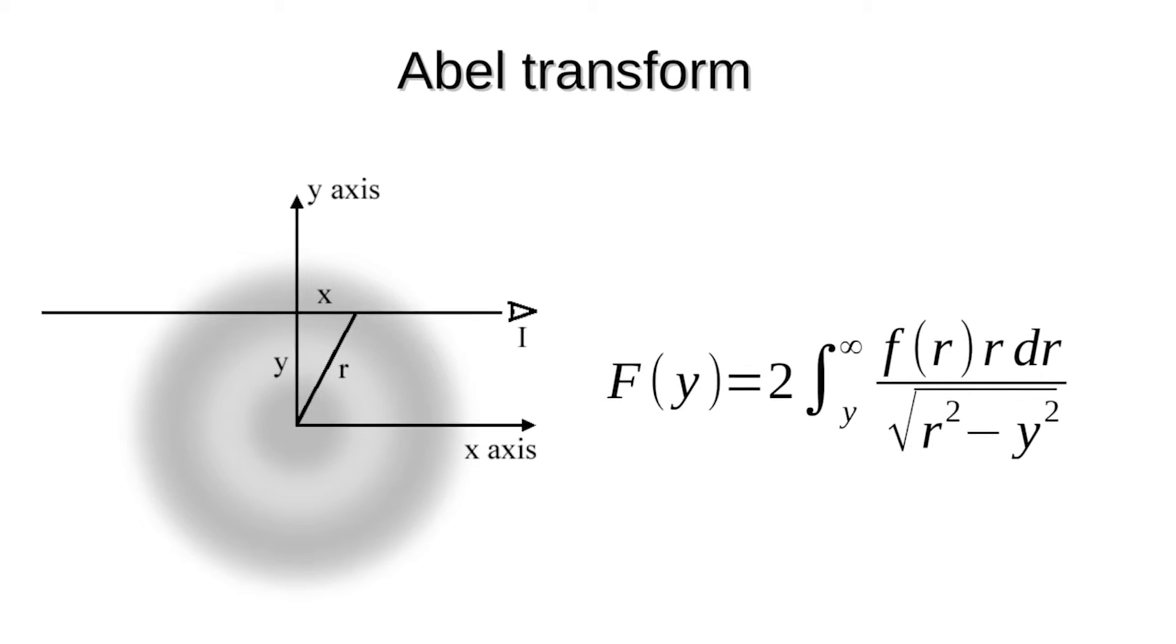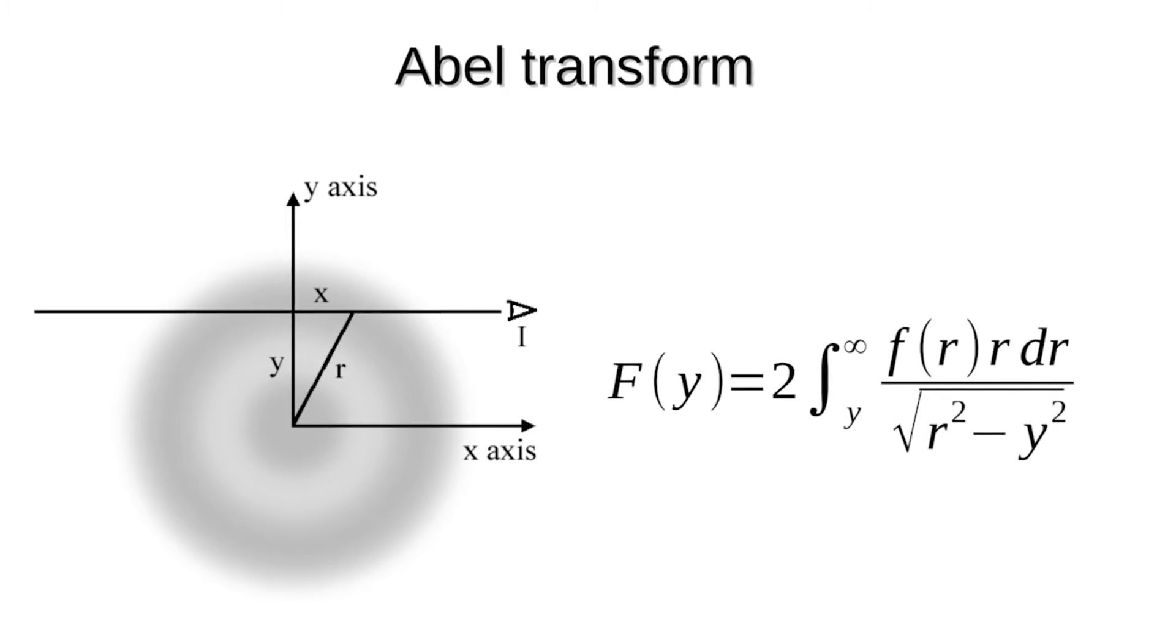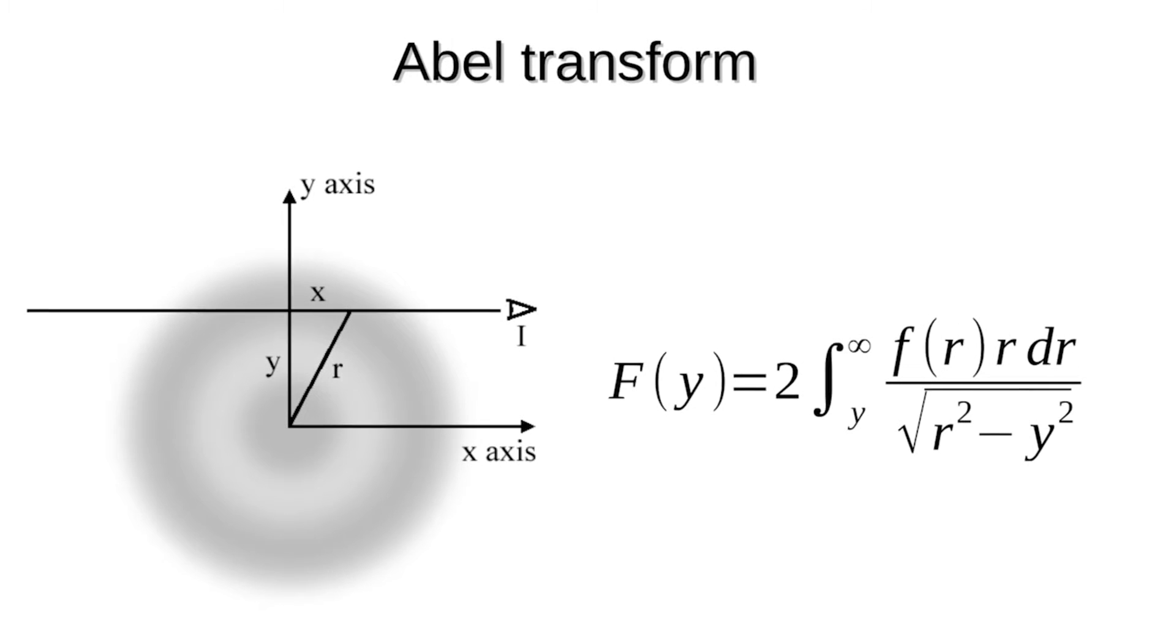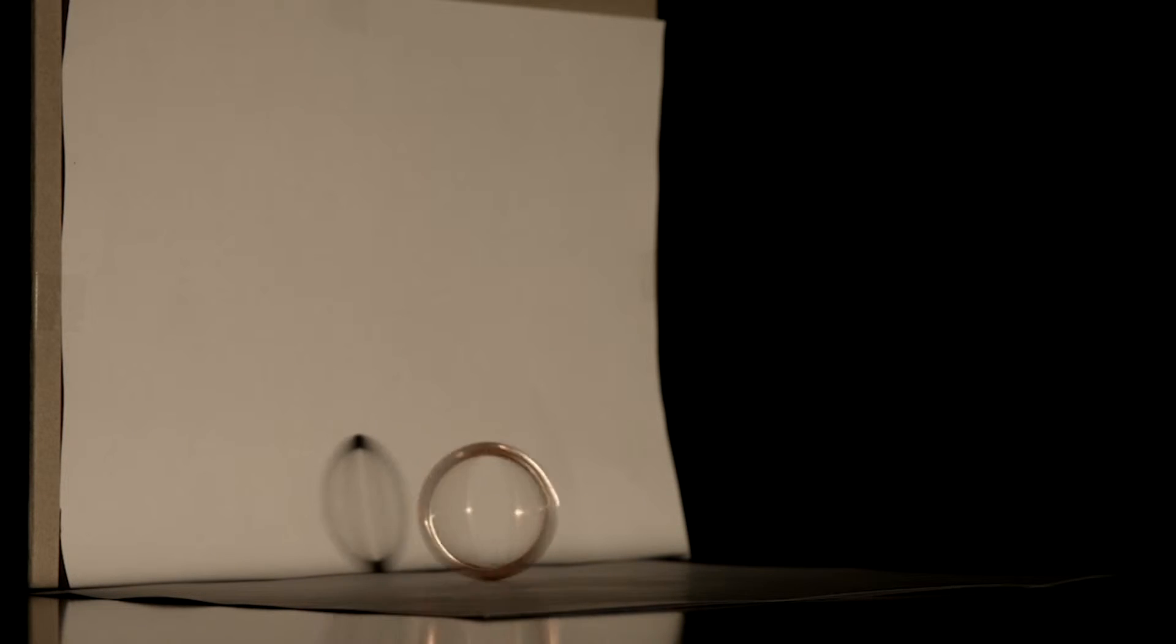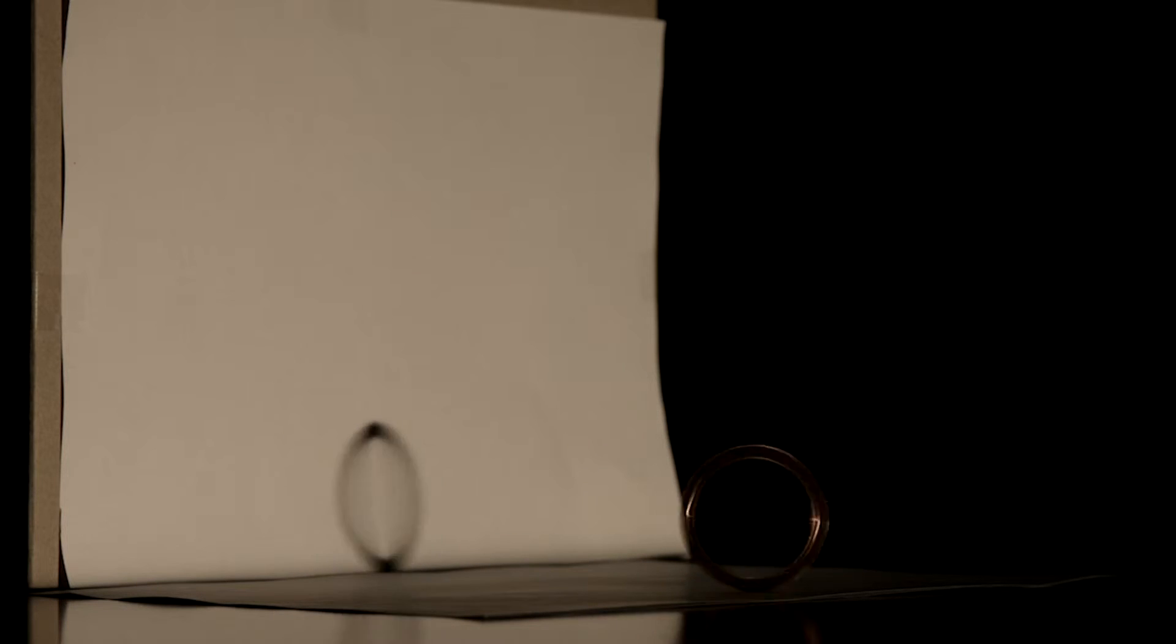The Abel Transform can be visualized in a very simple experiment. The three-dimensional distribution will be represented by a spinning ring. Here, I spin the ring and it forms a three-dimensional distribution, which is then imaged by the light on the screen. The shadow on the screen is the Abel Transform of our distribution.